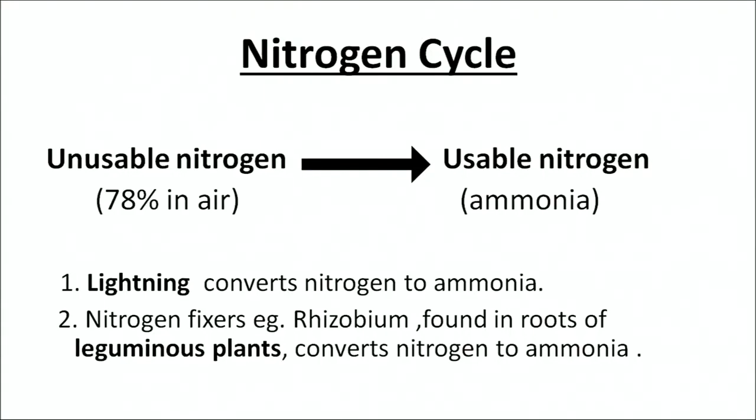The chief role of the nitrogen cycle can be understood as follows. The nitrogen in the air, which is 78%, is unusable. To make it usable, it has to be converted from an unusable form to a usable form. This conversion mainly happens in two ways: lightning converts nitrogen to ammonia, and the other mode involves nitrogen fixers — microbes such as Rhizobium found in the roots of leguminous plants — which convert nitrogen to ammonia.